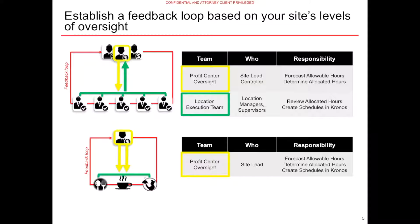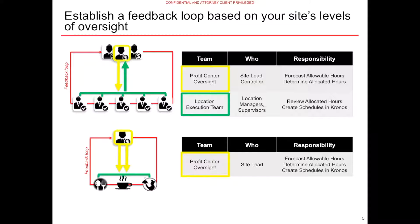Depending on the levels of oversight at your site, executional responsibilities may be held by one or multiple people. In profit centers with multiple locations and levels of oversight, the profit center oversight team — for example, the site lead or controller — may be responsible for forecasting allowable hours and allocating to specific locations, while the location execution team — for example, location managers or supervisors — are likely responsible for reviewing allocated hours and creating schedules in Kronos. In profit centers with one level of oversight, the profit center role may be responsible for forecasting allowable hours, allocating to specific locations, and creating schedules based off those allowable hours. In both scenarios, it is critical to establish a feedback loop through weekly meetings or daily huddles to ensure communication between profit center oversight and team members driving execution.